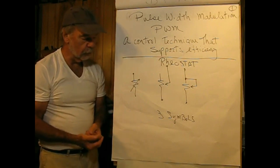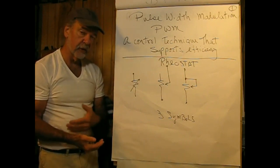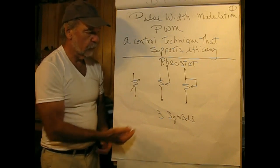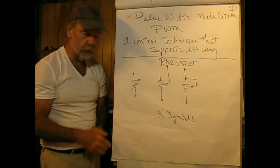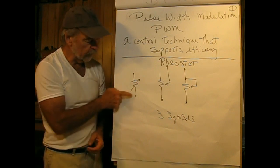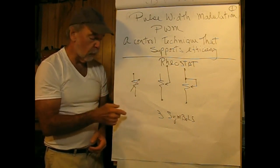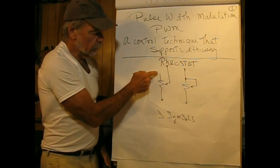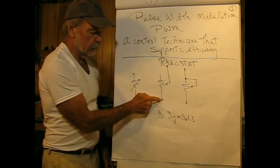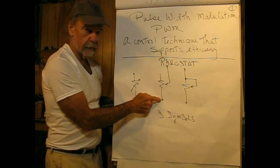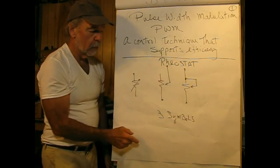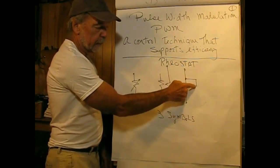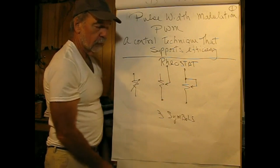We're going to start by comparing a resistive control circuit to a pulse width modulation control circuit. A resistive control circuit uses a device called a rheostat, which you may or may not be familiar with. There are three symbols for it: one is a variable resistor showing two terminals, another is a potentiometer where the two terminals are one end of the pot and the wiper, or a potentiometer can be shown with the wiper and one end connected together — so these two are effectively the same.